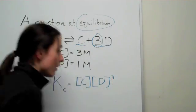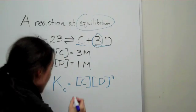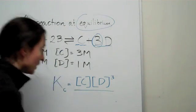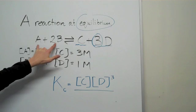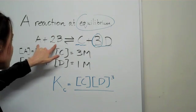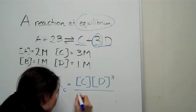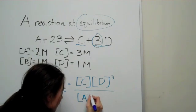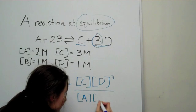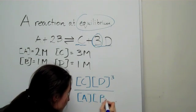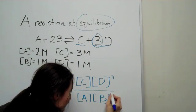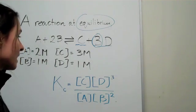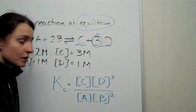Then you divide by the reactants, which was the definition of K value. We have the concentration of A times by the concentration of B, and you raise it to the power of two. That is your equilibrium constant expression.